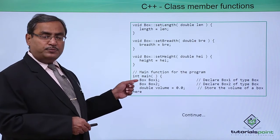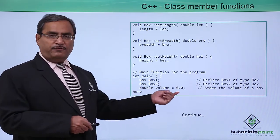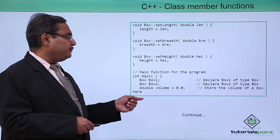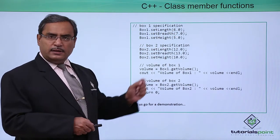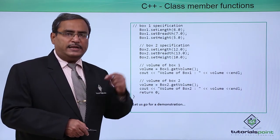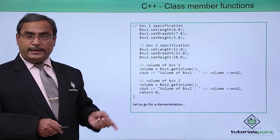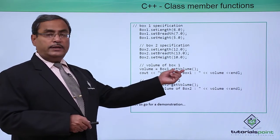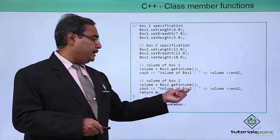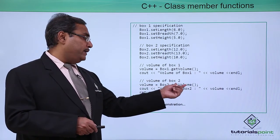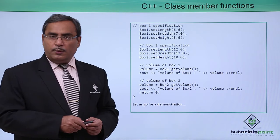In the main function we define two class objects: object 1 is box1 and object 2 is box2. A volume variable is defined locally. Then box1.set_length, set_breadth and set_height are called, passing double data so they get assigned to the respective variables. Similarly for box2, three double values are passed and assigned to the respective member variables. Then we calculate the volume of box1 using get_volume, assign it to volume, and print it. Then box2.get_volume is called, the volume is assigned and printed.